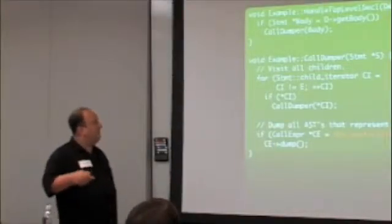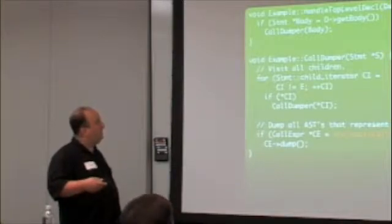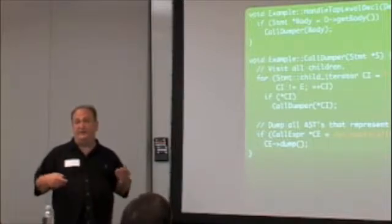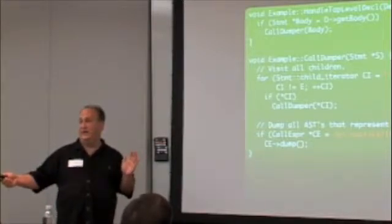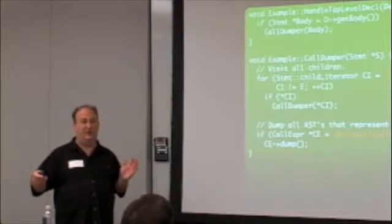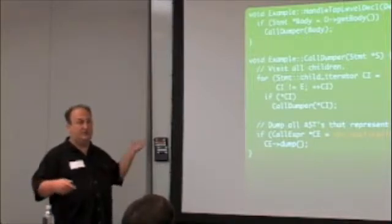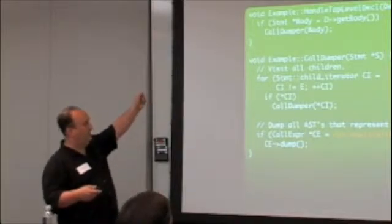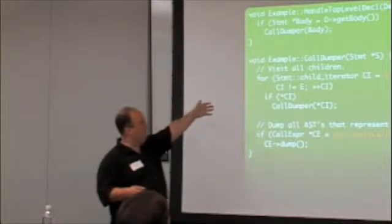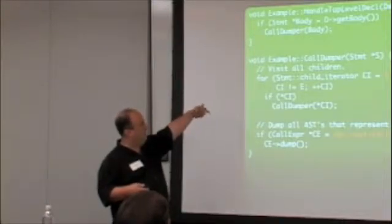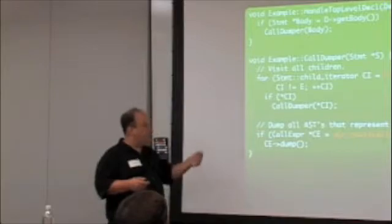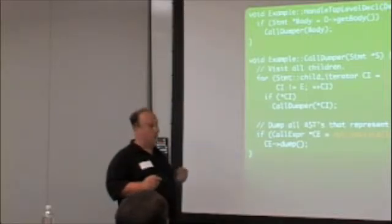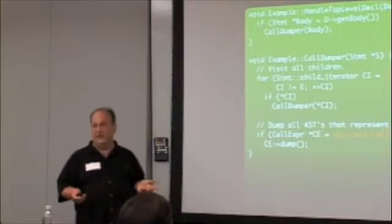So tying some of this together, let's say you were using AST dump and you were frustrated with the volume of information that was coming out and you wanted to write a custom little function to just dump all function calls. Well, that's what this code does. There's an AST consumer hook that gets called. This call dumper iterates through all of the statements. And here, using the dynamic cast mechanism, checks if it's a call expr. If it's a call expr, it dumps it. Very clean, very easy.